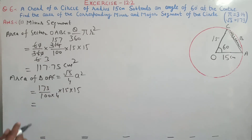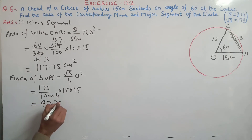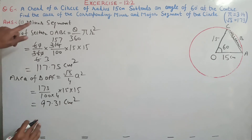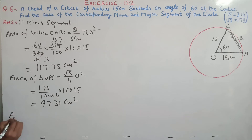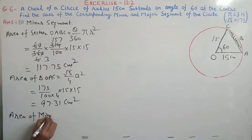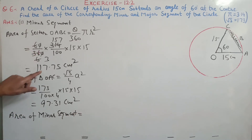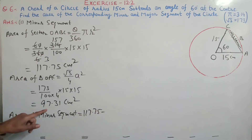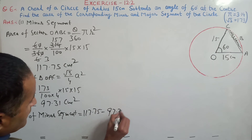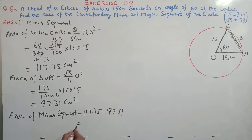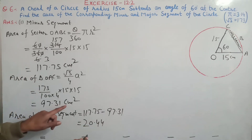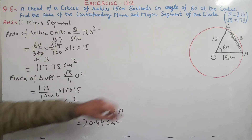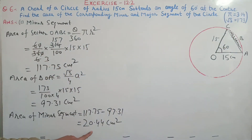We find the minor segment area as: sector area minus triangle area. That gives us 117.75 minus 97.31, which equals 20.44 centimeters squared. So the area of the minor segment is 20.44 cm².